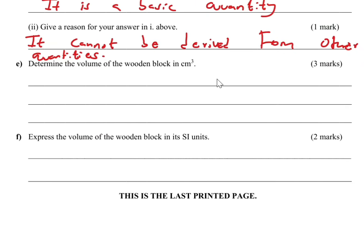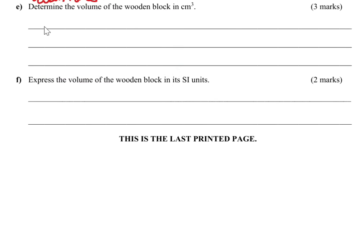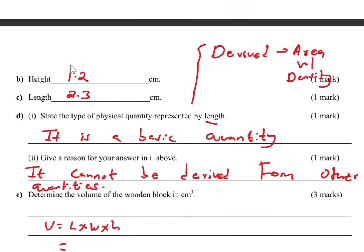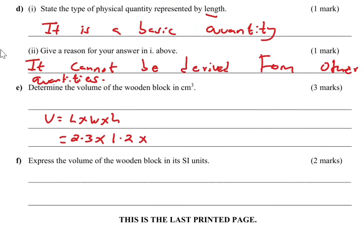Part E: determine the volume of the wooden block in cubic centimeters. Volume equals length times width times height. Our length is 2.3 cm, width is 1.2 cm, and height is 2.2 cm. So 2.3 × 1.2 × 2.2 gives the answer 6.072 cubic centimeters. You score those three marks.